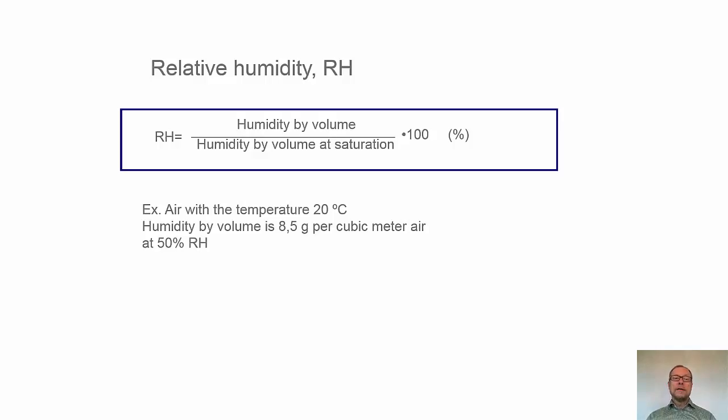Relative humidity, RH, is an important concept. It's the relative amount of humidity by volume in the air compared with the maximum one. So RH equals the humidity by volume for a certain volume divided by the saturated value, and then times 100, you get a percent.